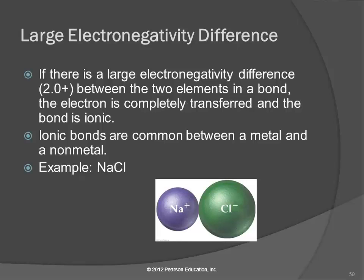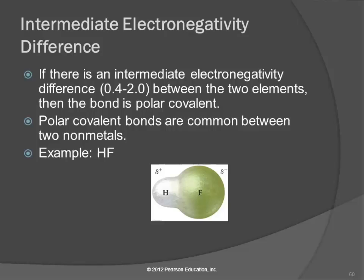There's a continuum from zero electronegativity difference, where electrons are shared completely equally, up to an extreme difference where one atom takes the electron and the other gives it up completely, with polar covalent bonds in between. Ionic bonds are between a metal and a nonmetal. The intermediate difference - between 0.4 and 2.0 - is the polar covalent bond. There may be questions in Mastering Chemistry where you look at the chart and compare electronegativity differences to decide polar, nonpolar, or ionic, but I won't do that on an exam and you don't have to memorize the chart.